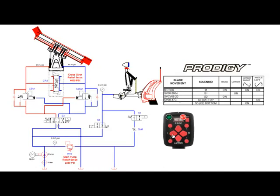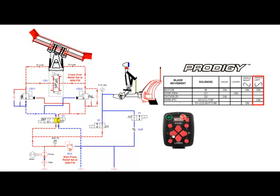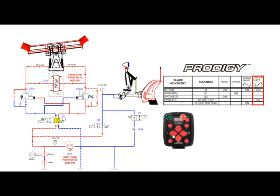Pressing the left function will engage both motor relay and the S3 top coil. S3 valve will shift allowing fluid to flow through the counterbalance valve to the passenger side angle ram. Fluid from the driver side angle ram is returned through the counterbalance valve and back to tank. Once the angle ram is fully extended, fluid will flow through RV3 and back to tank.